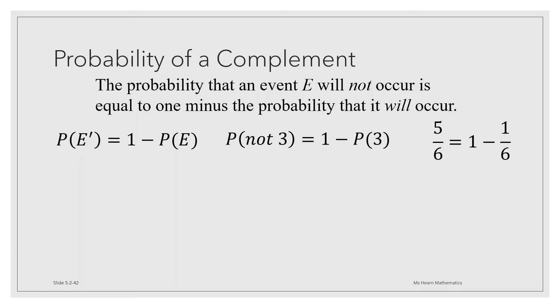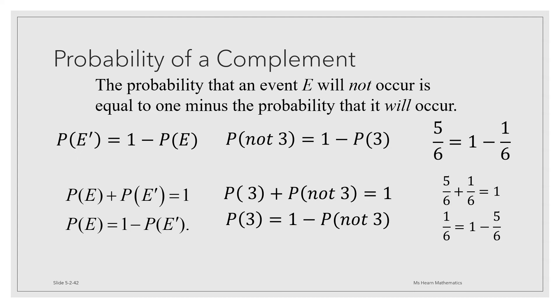These relationships can also be rearranged. You could say that the probability of E plus the probability of not E is equal to 1. Or the probability of E is equal to 1 minus the probability of not E. This would mean that the probability of rolling a 3 plus the probability of not rolling a 3 equals 1. And the probability of rolling a 3 equals 1 minus the probability of not rolling a 3. And it turns out that both of these relationships are also true.